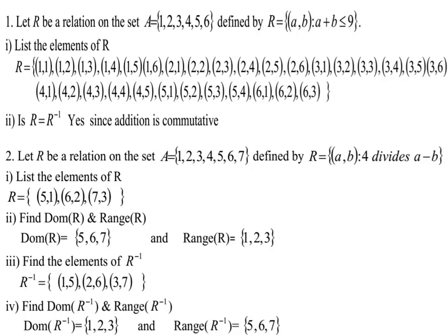Find the domain and range of R inverse. Since R inverse is {(1,5), (2,6), (3,7)}, the domain of R inverse is {1, 2, 3} and the range of R inverse is {5, 6, 7}. Alternatively, by the relationship between R and R inverse, the domain of R equals the range of R inverse and the range of R equals the domain of R inverse.